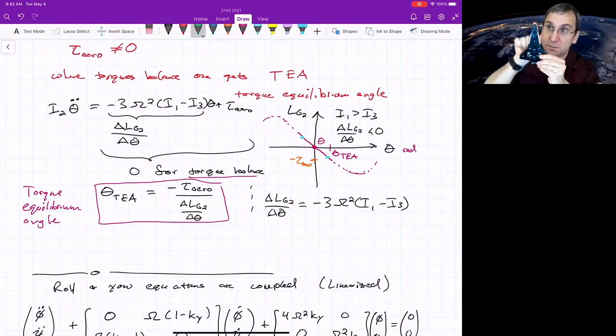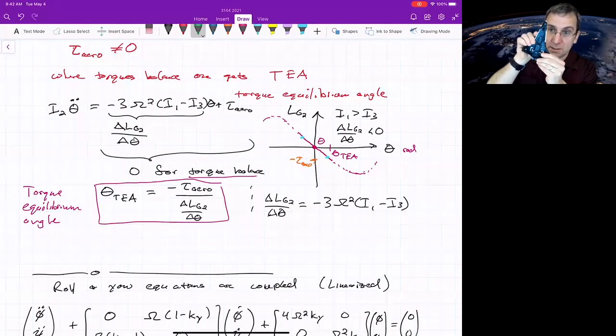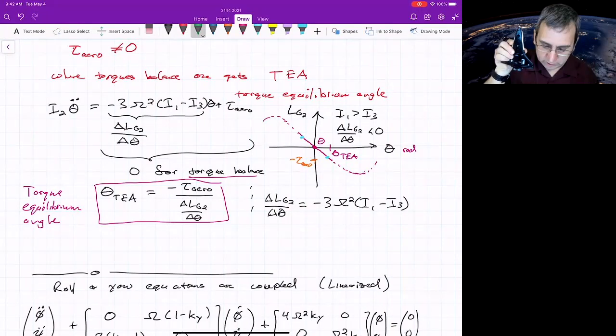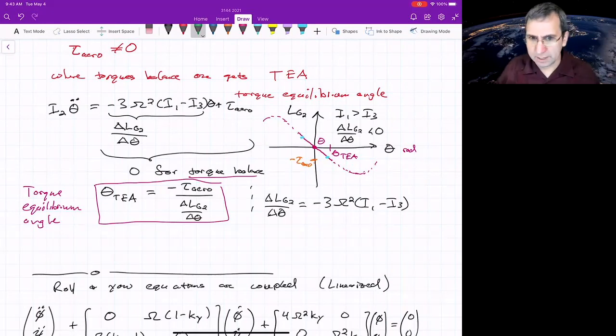And so then you would get that the equilibrium pitch, remember, pitch would be the deflection with respect to this. So this would be slightly... you could calculate what that torque equilibrium angle is, or in the terminology of literature, they call it TEA. And that wasn't in the book.